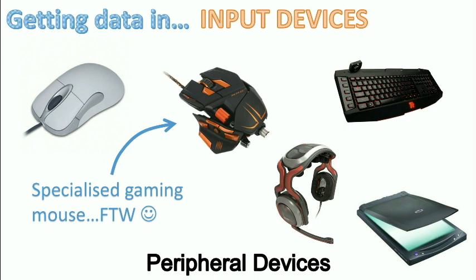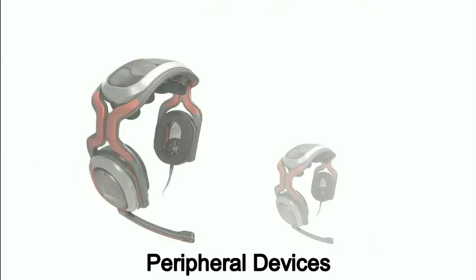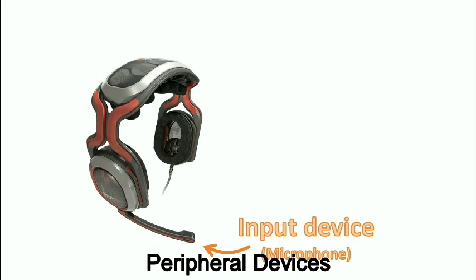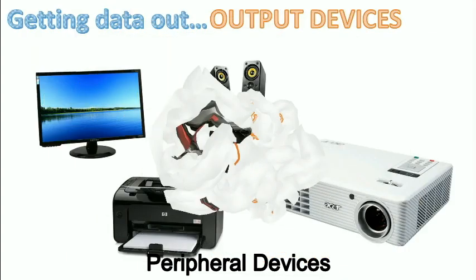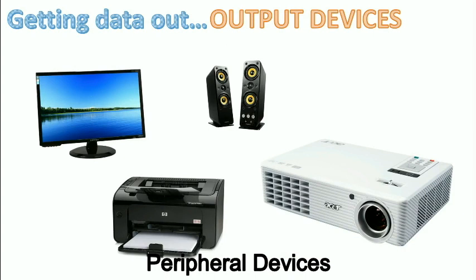Other input devices include the keyboard, a scanner, and a microphone. This headset is a hybrid device — the microphone is the input device, but the headphones are an output device. Some headsets also include vibration feedback, so if you get shot in a game the headset vibrates too. So it functions as both an input and an output device.